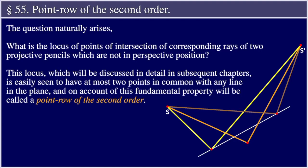Section 55, Point Row of the Second Order. The question naturally arises: what is the locus of points of intersection of corresponding rays of two projective pencils which are not in perspective position?